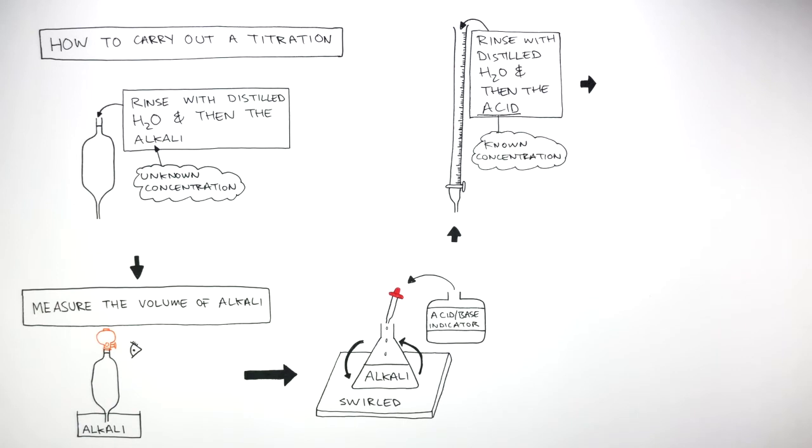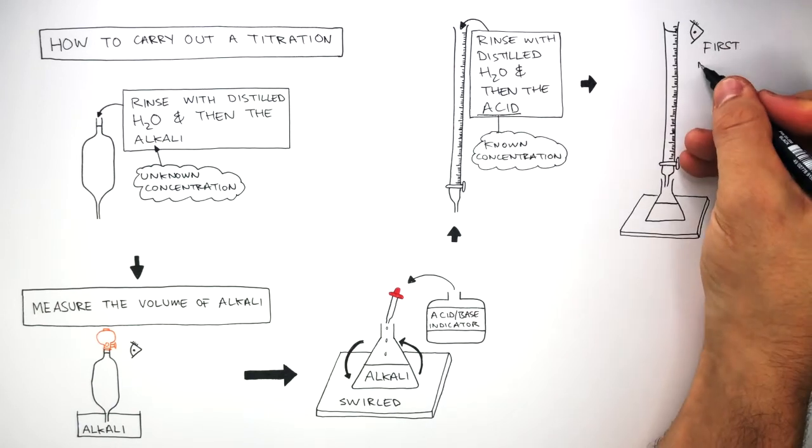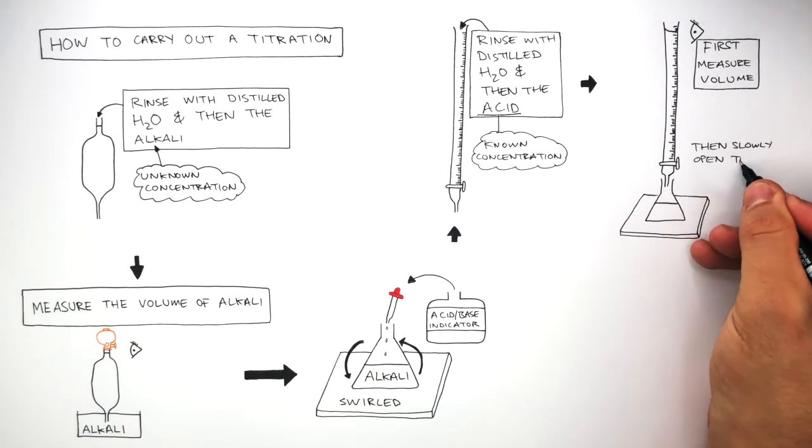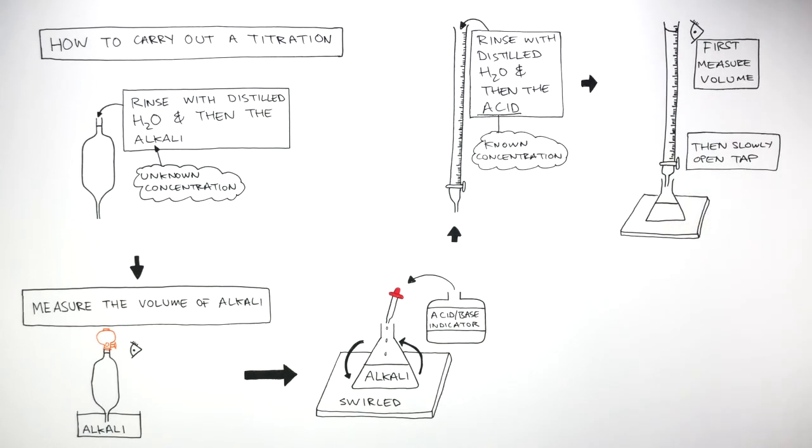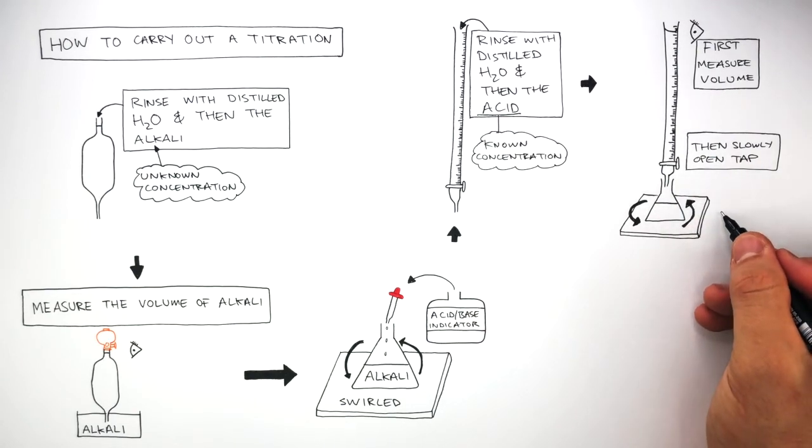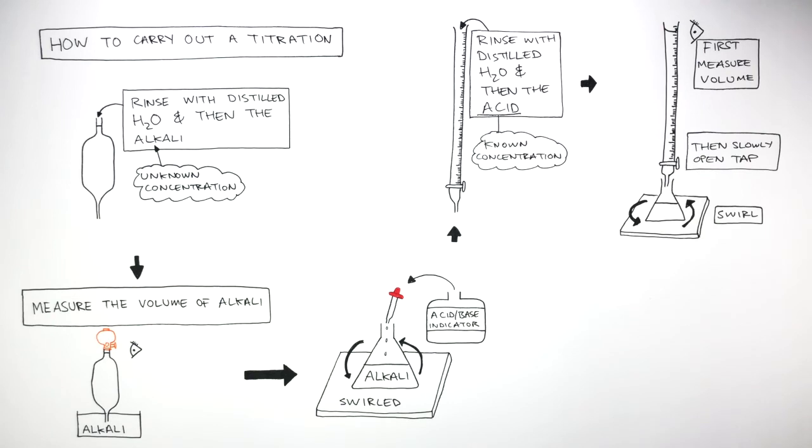When adding the acid to the conical flask, at eye level, first measure the volume of acid in the burette. Then open the tap to slowly release a small volume of acid, swirling the conical flask. You need to swirl the conical flask.